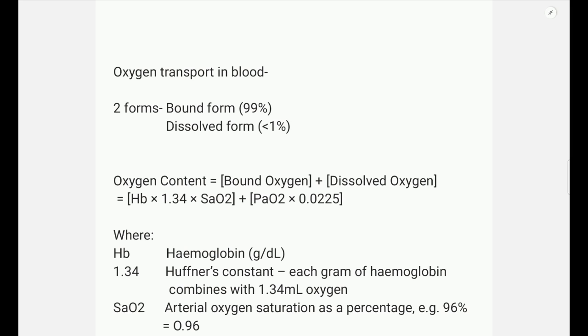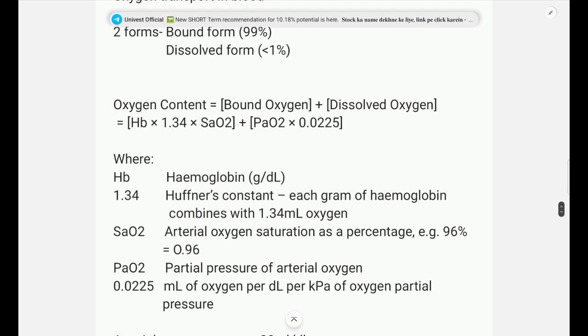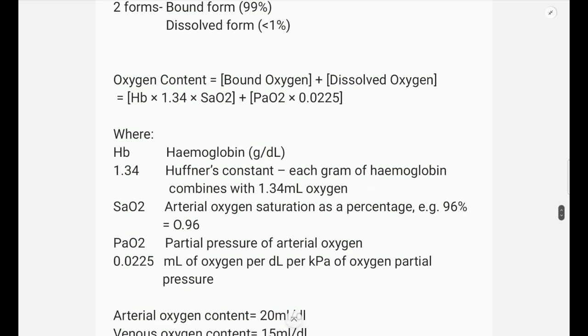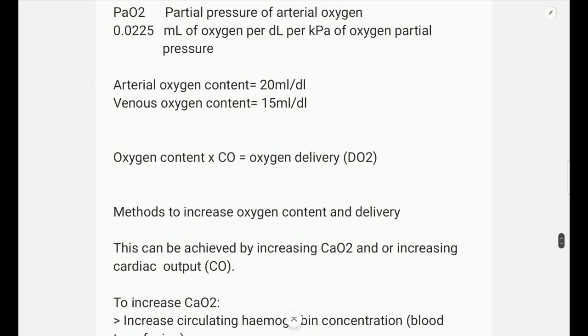This is the formula for calculating the oxygen content, which we have also discussed in the previous video. It is equal to hemoglobin into 1.34 which is the Heffner's constant, into oxygen saturation, plus partial pressure of oxygen into 0.0225. Now Hb is obviously the hemoglobin concentration. 1.34 is the Heffner's constant which tells us how much oxygen binds with 1 gram of hemoglobin. Then the oxygen saturation we obviously know about. Partial pressure of oxygen 0.0225 is the ml of oxygen per deciliter of blood per kilopascal of oxygen partial pressure.